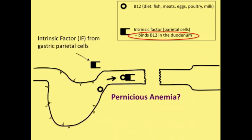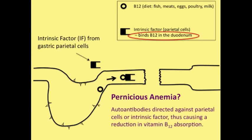Last, we have pernicious anemia. So who remembers what pernicious anemia is? This is a disease entity where autoantibodies are directed against the parietal cells or intrinsic factor itself, thus causing a reduction in vitamin B12 absorption.